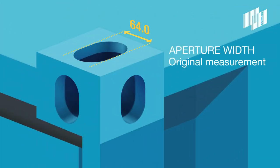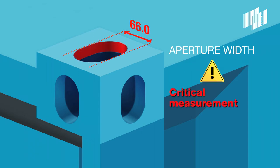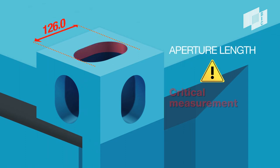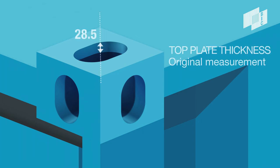The width of the corner fitting top aperture must not exceed 66 mm. The length of the corner fitting top aperture must not exceed 127 mm. The top plate thickness must not be less than 23 mm.